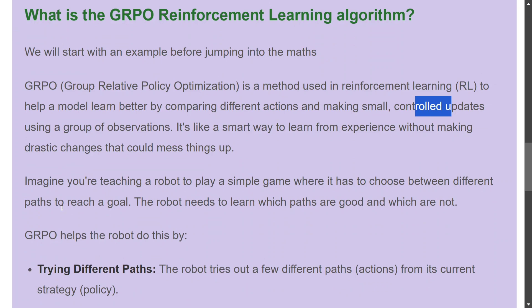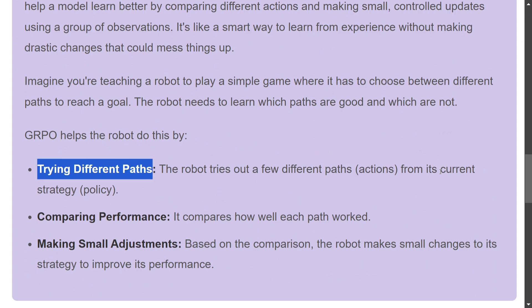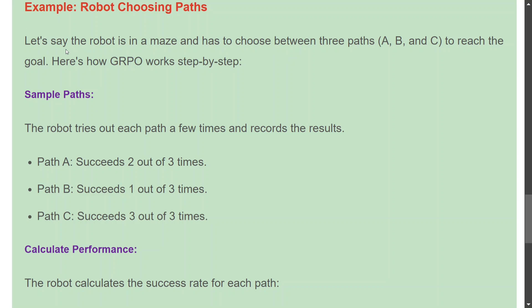Assume you are teaching a robot to play a simple game where it has to choose between different paths to reach a goal — very similar to snakes and ladders. GRPO helps the robot by trying different paths from its current strategy or policy. Using the current policy logic to choose the next action, it tries out a few paths. Once you have enough samples — say 10 episodes given the same policy — you come back and check what action should have been taken better, then adjust the algorithm.